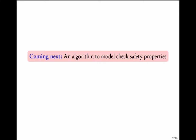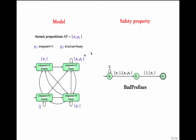So far we have seen what regular safety properties are. Let us now come up with an algorithm to model check regular safety properties. We have a model — a transition system along with atomic propositions — and we are given a regular safety property whose bad prefixes are given in terms of an automaton. What we want to check is whether there are traces in this model which have a bad prefix. If they have a bad prefix, the model does not satisfy the safety property. However, if no trace has a bad prefix, then the model satisfies the safety property.